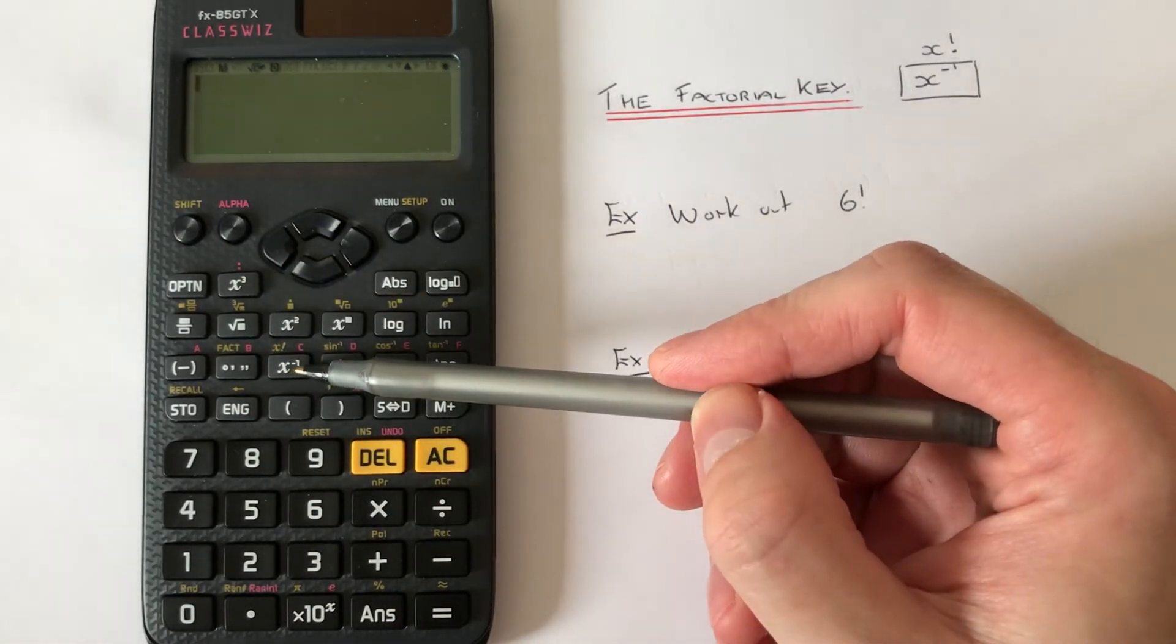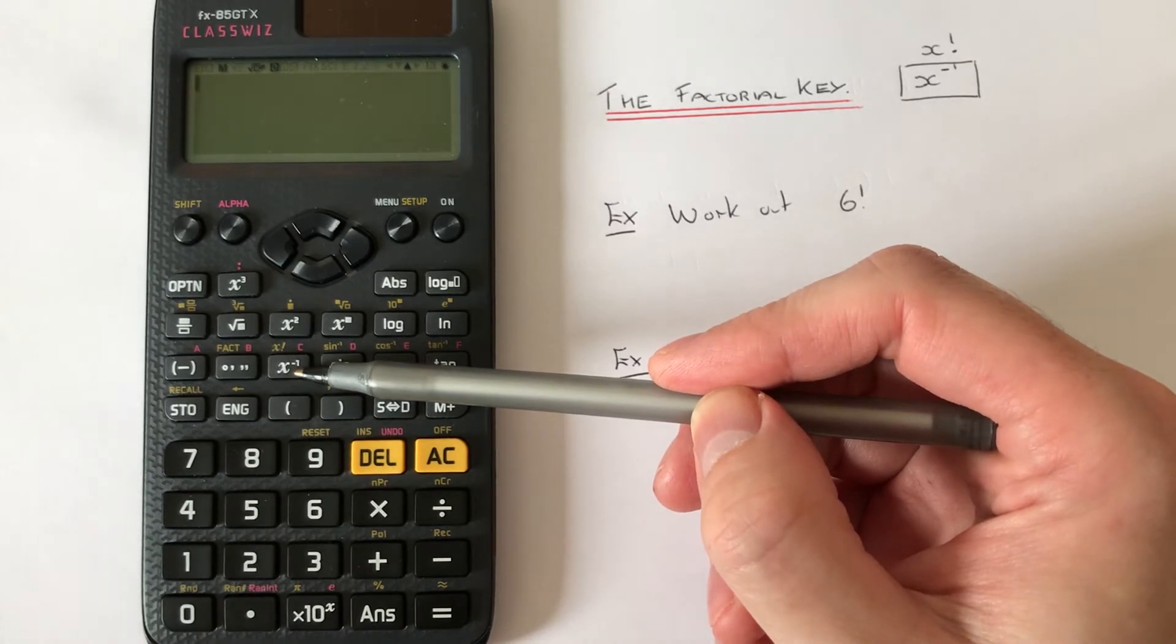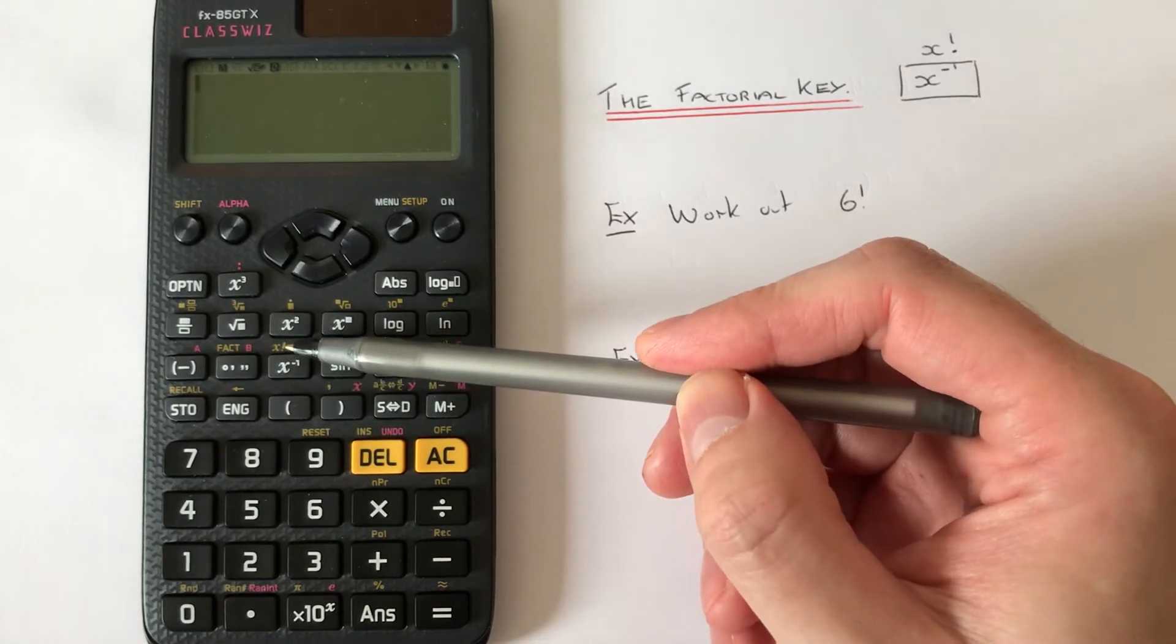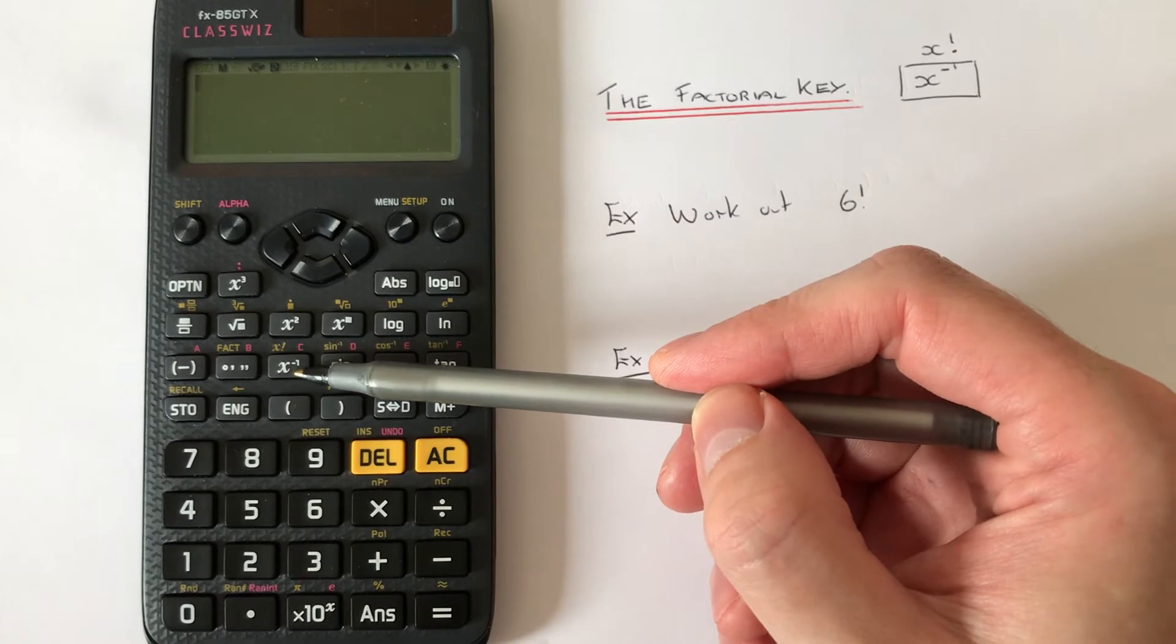So let's work out six factorial. If you press six first of all, then shift X to the power minus one...